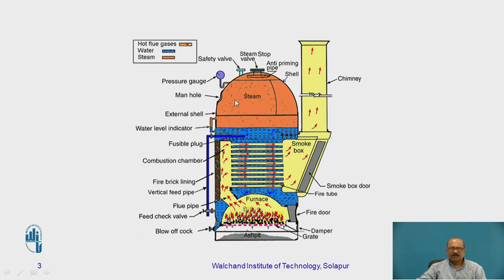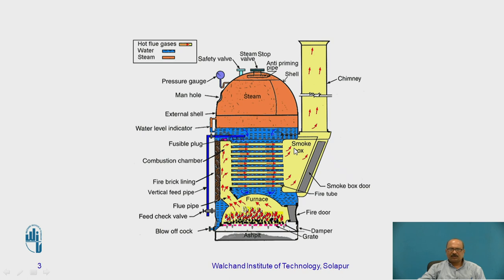Here the constructional details have been displayed in this particular slide. Different parts are given and we are going to be studying the working, advantages, as well as the different construction parts. In the overall view, the red color represents higher temperature, the blue color represents water, and there is also a steam part. This boiler is a fire tube boiler.